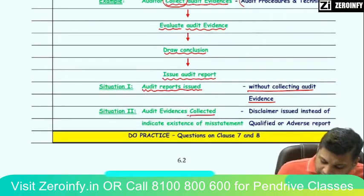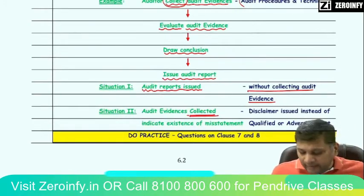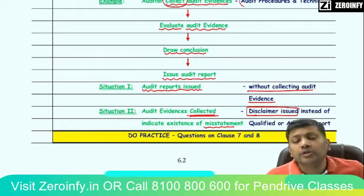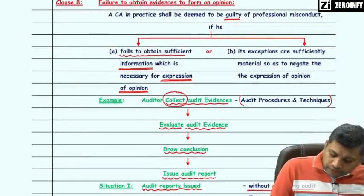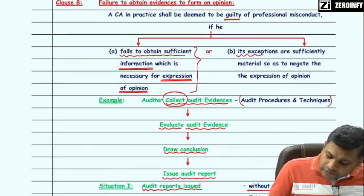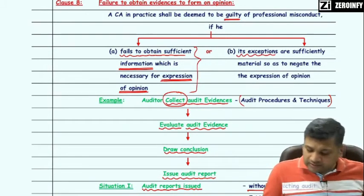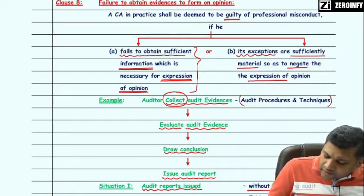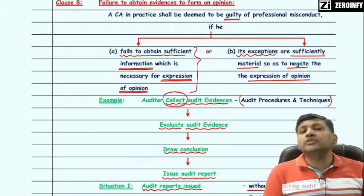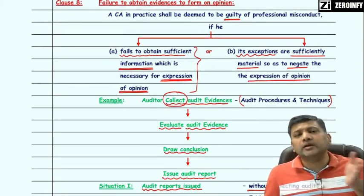Situation 2: audit evidence is collected and these evidences indicate existence of misstatement, but the auditor or practicing CA issues a disclaimer instead of a qualified or adverse opinion. So the two points under Clause 8: first, if the practicing CA fails to obtain sufficient information necessary for expressing an opinion; second, its exception implies he collects sufficient evidences sufficiently material to negate the expression of opinion — he needs to express a qualified or adverse opinion but instead issues a disclaimer.